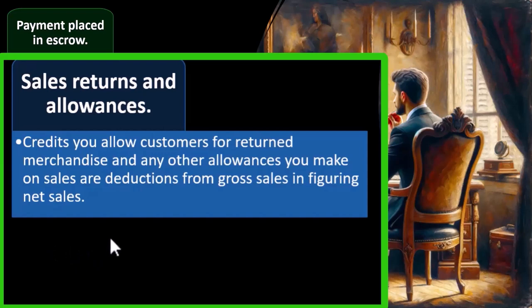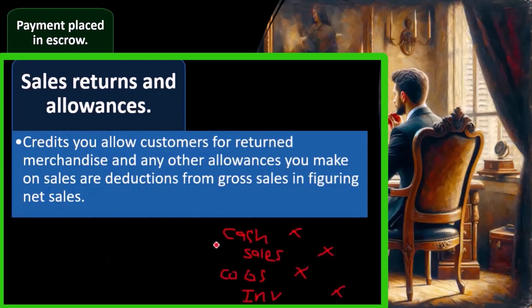When we make a sale for cash, the journal entry is: cash goes up, sales goes up, cost of goods sold (the expense) goes up, and inventory goes down. The net impact on net income is sales minus cost of goods sold.